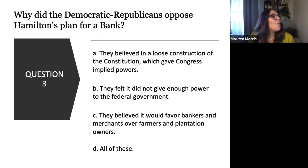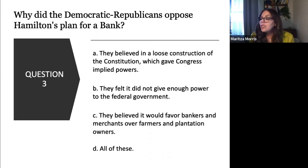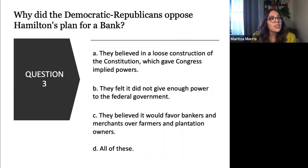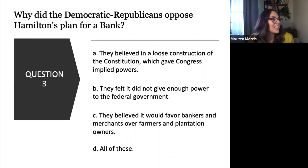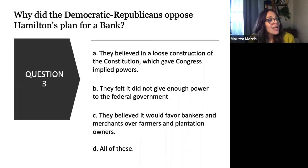Why did the Democratic-Republicans oppose Hamilton's plan for the bank? The answer is: they believed it would favor bankers and merchants over farmers and plantation owners — that's who they are and who they're fighting for. That's the correct answer. So Hamilton wins two for two.